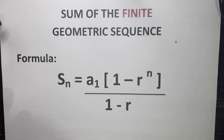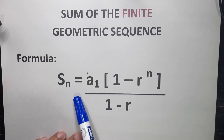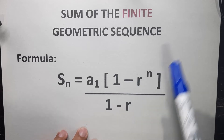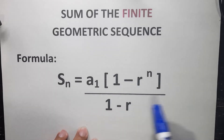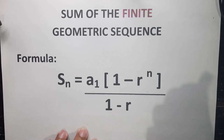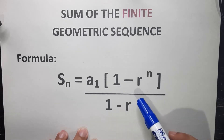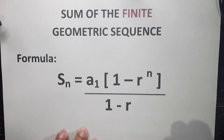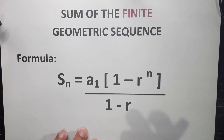To get the sum of the finite geometric sequence, our formula is S sub n, which is equal to A sub 1 times the quantity of 1 minus r raised to the power of n, divided by 1 minus r. Where A sub 1 refers to the first term, r refers to the common ratio, and n refers to the number of terms that we're going to calculate.